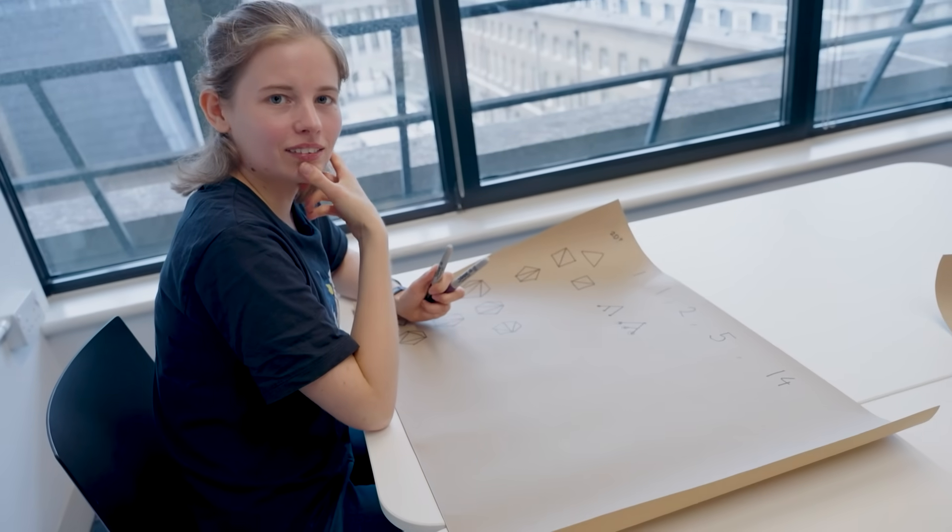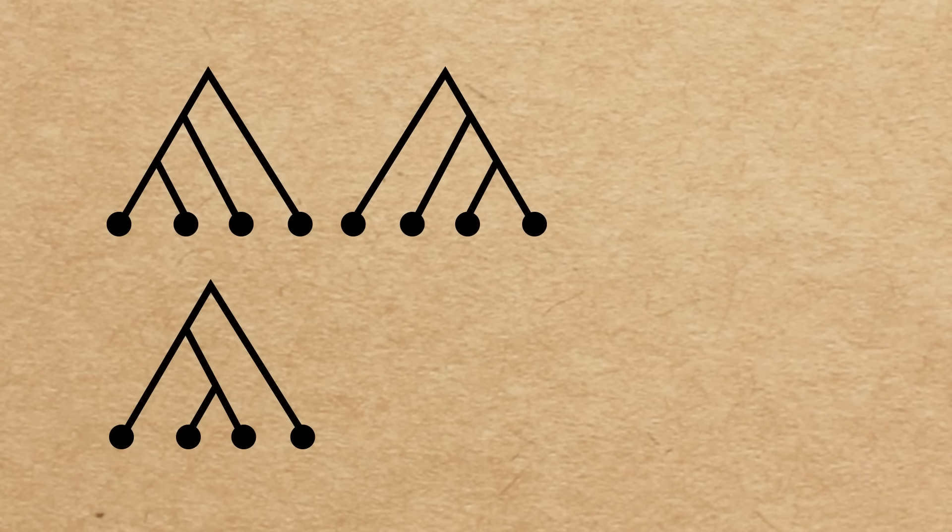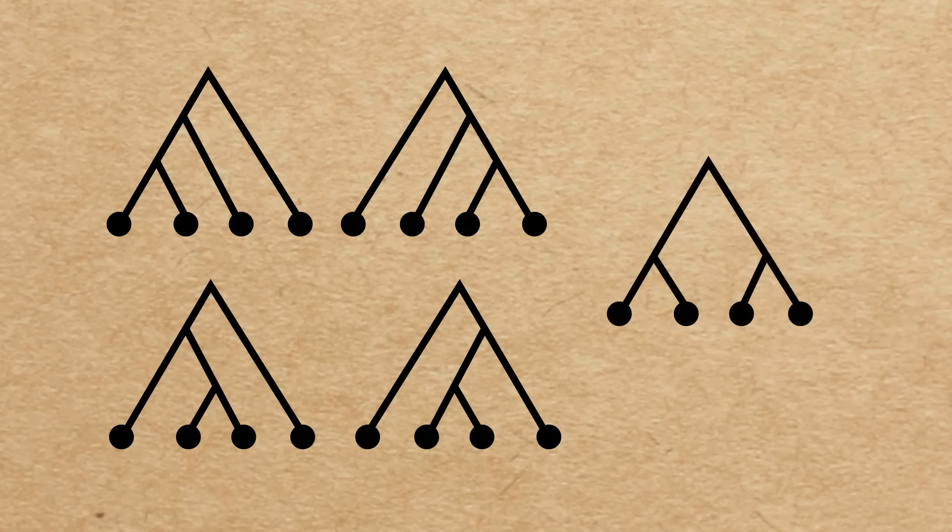How many binary trees do we think there are of order four? Well we'll start drawing them. We've got one like this. We can then maybe do that. Oh and we can reflect this one now. So then we get this and we can also reflect this one. Oh and actually there is one more we can get. So I'm fairly confident these are all of them. There are five.